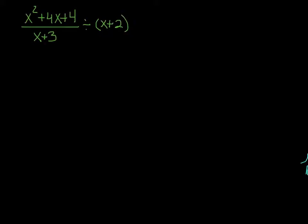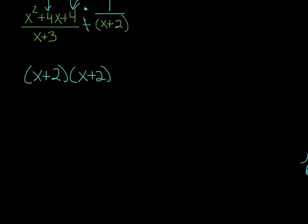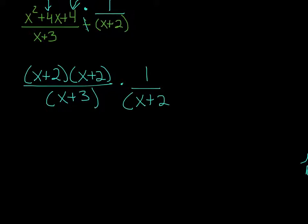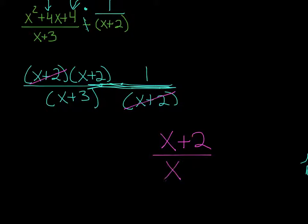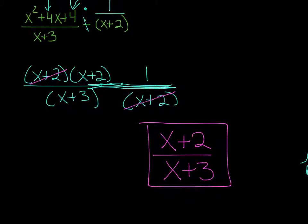Here's a division example: x squared plus 4x plus 4 divided by x plus 3, all divided by x plus 2. Take the second part, turn the division into multiplication, and flip x plus 2 to get 1 over x plus 2. Factor the numerator: factors of 4 that add to 4 are 2 and 2, so x plus 2 times x plus 2, all over x plus 3. Multiplying by 1 over x plus 2, we cancel one set of x plus 2's. The answer is x plus 2 over x plus 3.